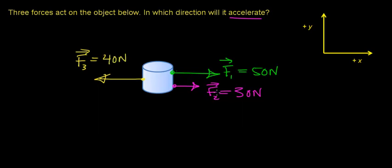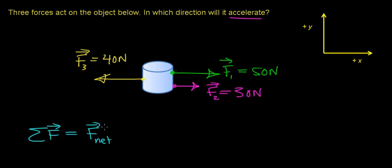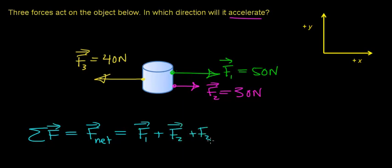The question now is: in which direction is this object going to start to accelerate? Forces cause objects to accelerate in the direction of the net external force. So we need to figure out what the net force is. Sometimes we write it as the sum of the forces — it's a vector term — or sometimes we write it as F subscript net. In this case, there are three forces acting on this object: force 1, force 2, and force 3. We're going to add up all three, remembering they're vectors with both magnitude and direction.